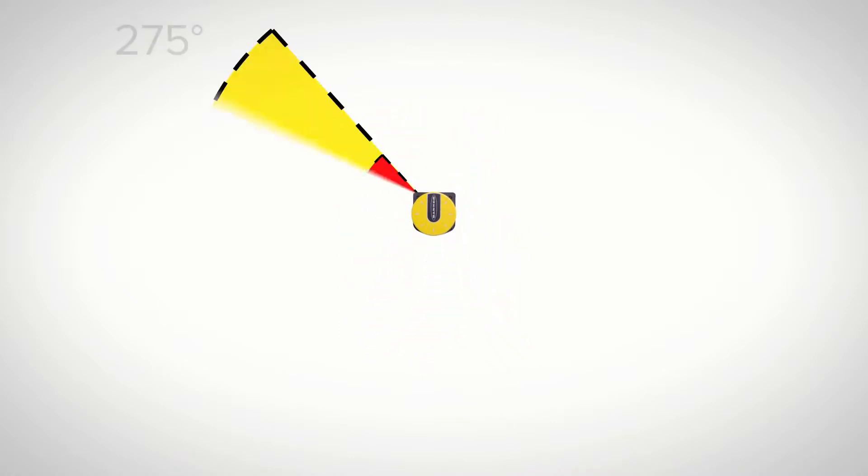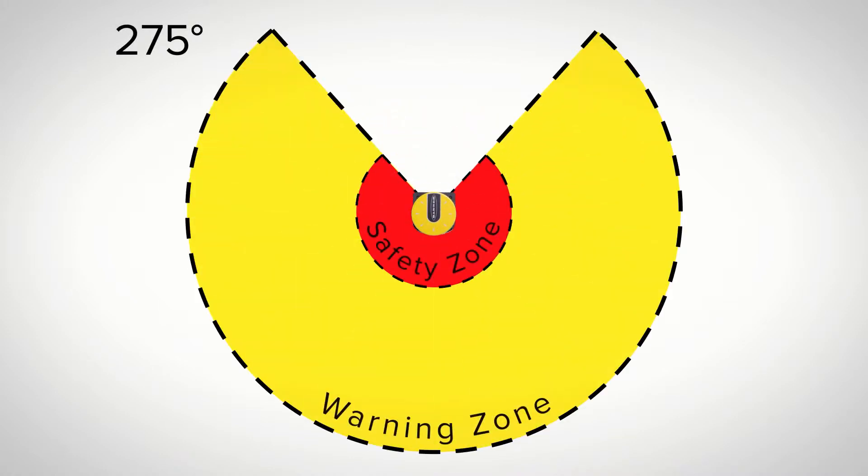Continuously scan a 275 degree area around the device to create safety zones up to 5.5 meters and warning zones of up to 40 meters.